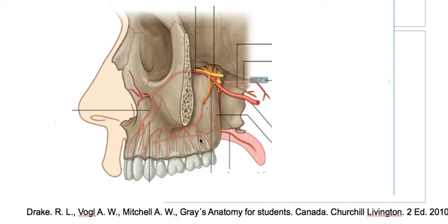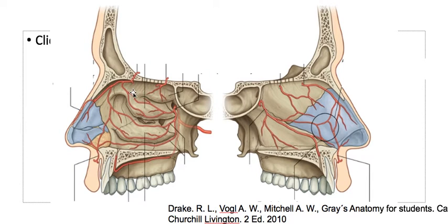Some branches of this palatine artery are the nasal branches that will supply the nasal cavity. Here we have the nasal branches of the palatine artery and this is the greater palatine artery.